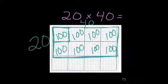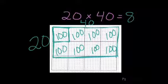The area of my rectangle, or 20 times 40, is 1, 2, 3, 4, 5, 6, 7, 8, 800.